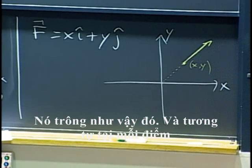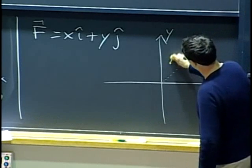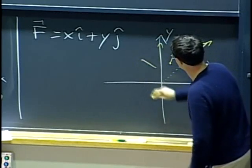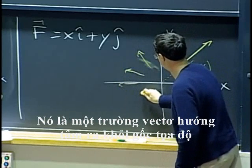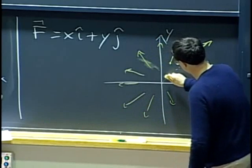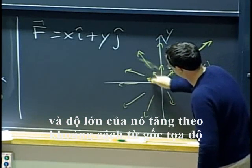It looks like that. And, you know, the same thing at every point. It is a vector field that is pointing radially away from the origin. And, its magnitude increases with distance from the origin.